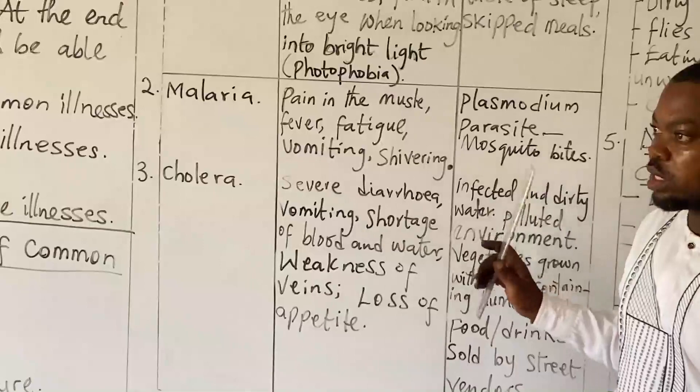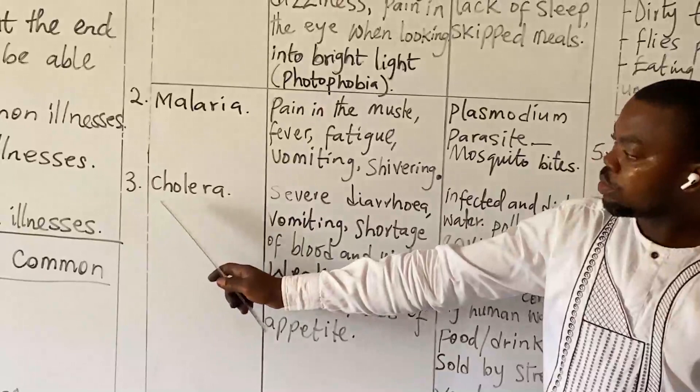When we allow mosquitoes to bite us, you know that it will give us malaria. This female Anopheles parasite gives malaria. Number three, cholera.